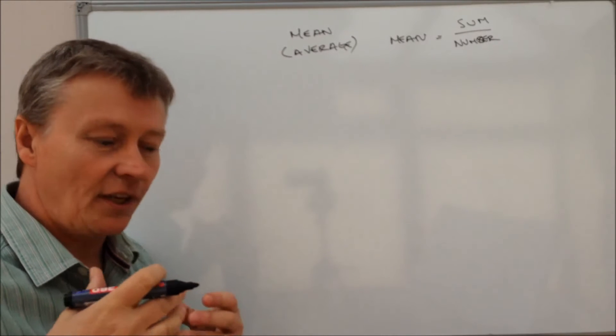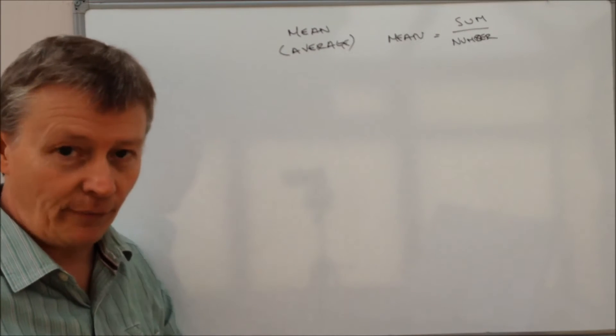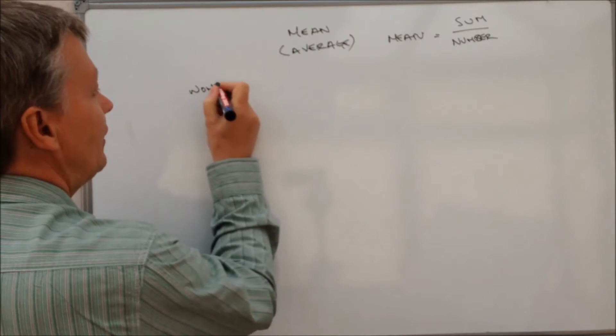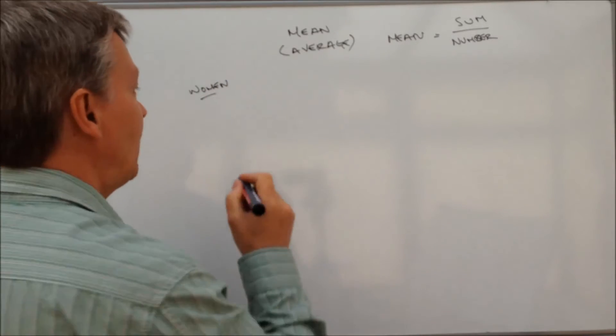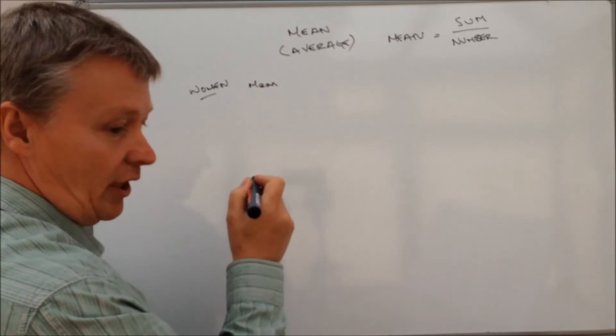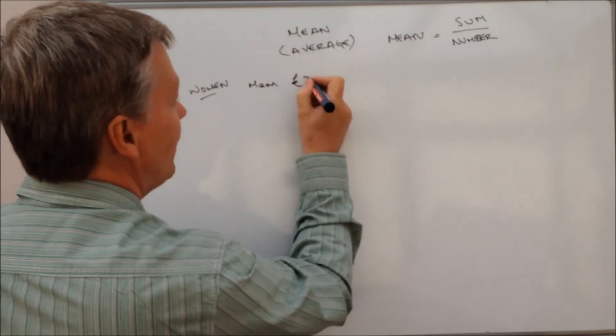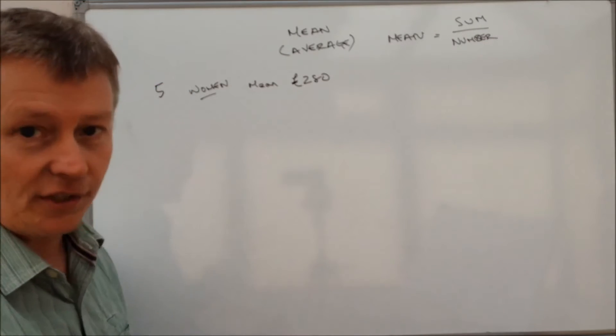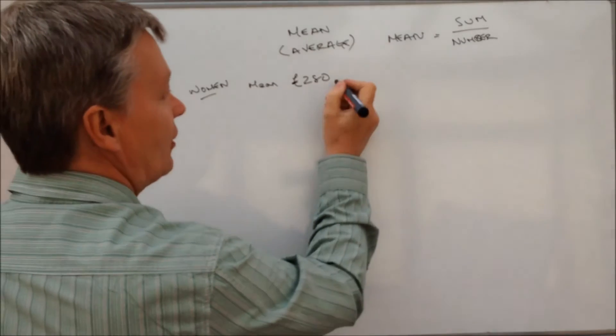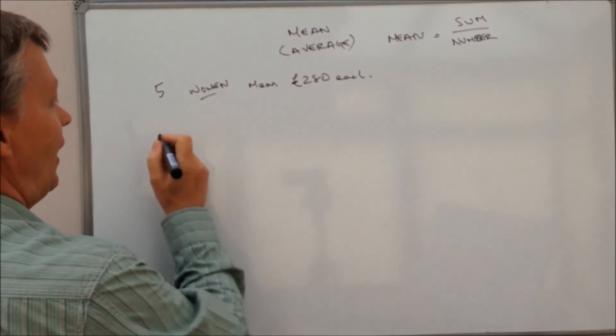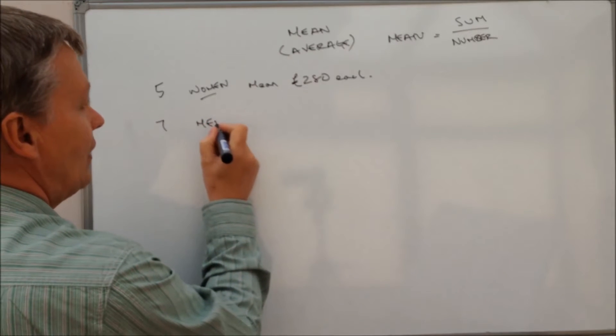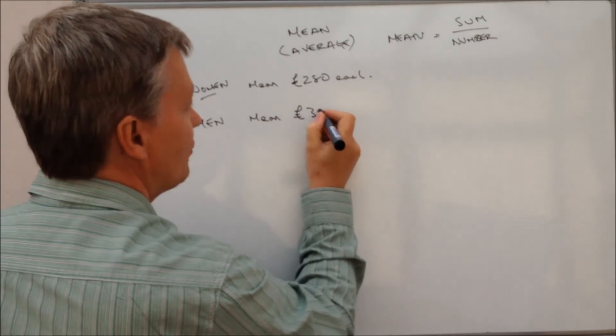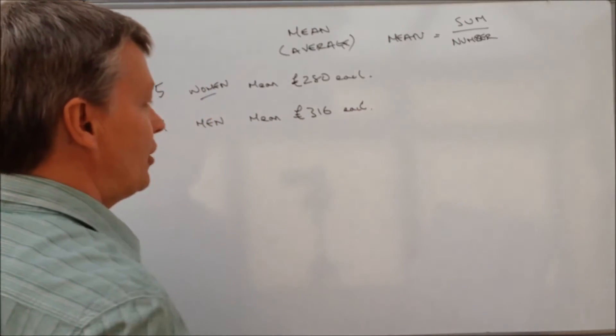It's just a case of applying this formula to the information that you're given. Now the information is that the women in a particular job, their mean weekly wage is 280 pounds. So that's what they earn on average and there are actually five of them. There's also seven men, and their mean or their average pay is a little bit more, it's 316 pounds each.